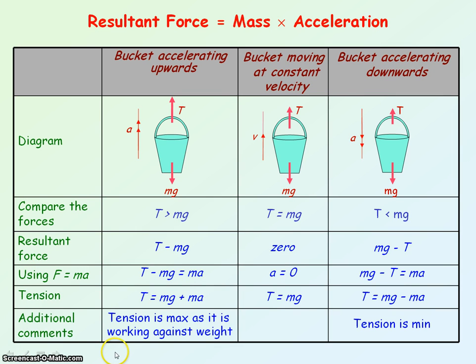When the bucket is accelerating upwards, the tension is maximum because the tension must work against the weight to provide the resultant force for upward acceleration. When the bucket is accelerating downwards, the tension is minimum because it doesn't have to overcome the weight to provide a resultant force. That's why accelerating a bucket upward feels harder — you have to provide more tension in the handles.